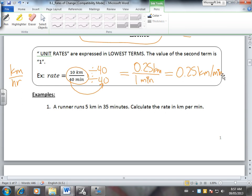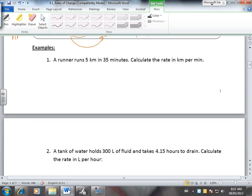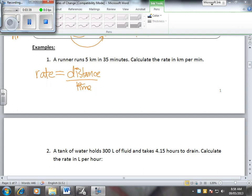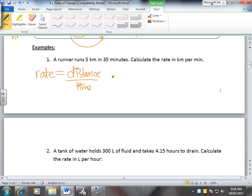To express the unit rate of 10 kilometers per 40 minutes as a unit rate in the lowest terms, we end up with 0.25 kilometers per minute. You'll have lots of practice. A runner runs 5 kilometers in 35 minutes. Calculate the rate of kilometers per minute. So in this case, our rate, remember, equals two quantities. We're going to do kilometers per minute, which is distance over time.